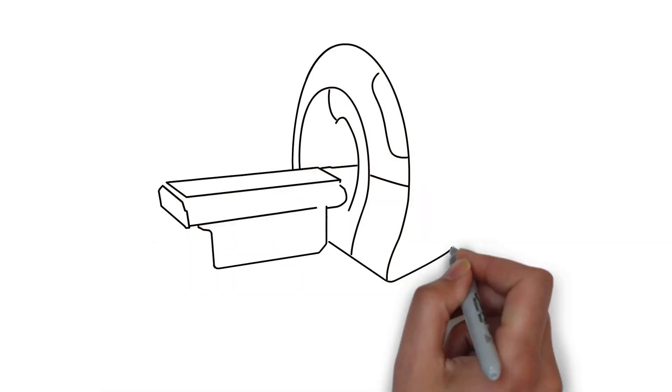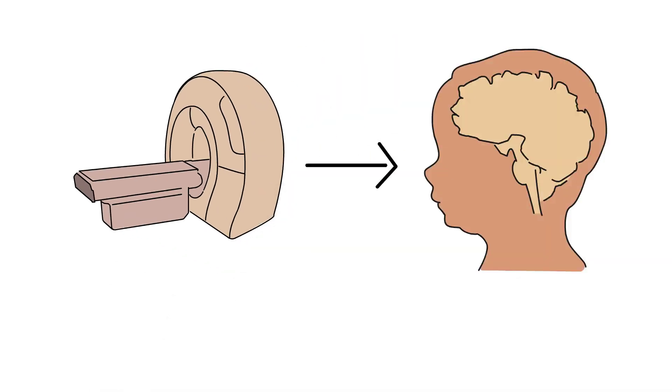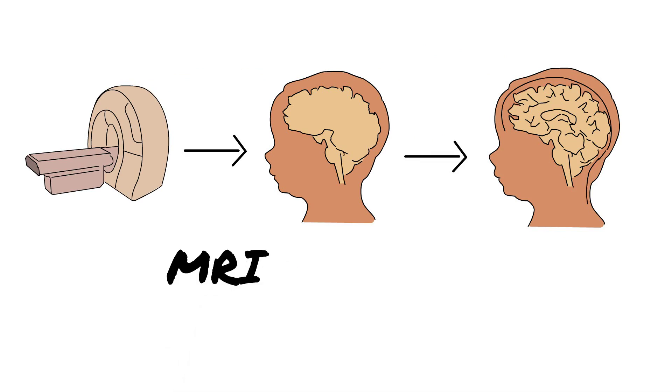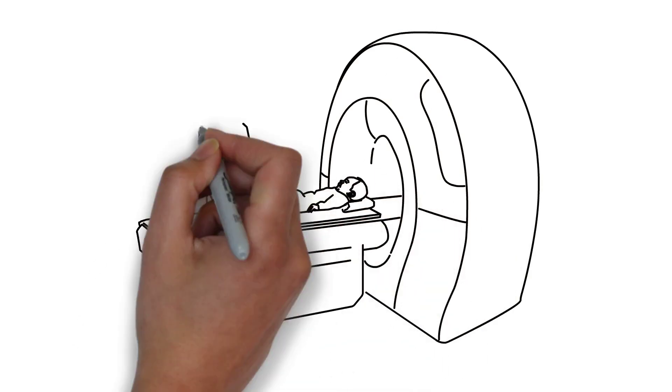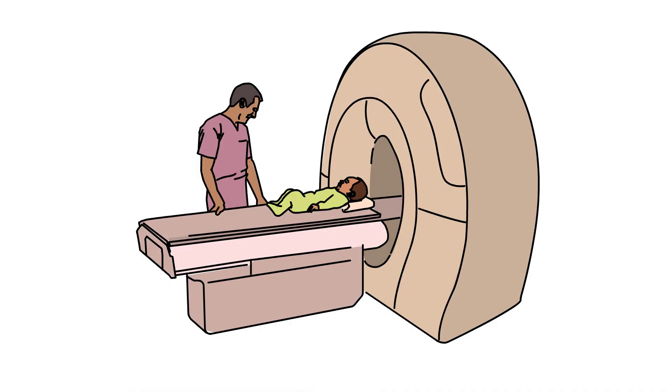The doctors ordered a picture of her brain. This is called a brain MRI. MRI stands for magnetic resonance imaging. An MRI takes pictures of the structures inside the brain. It is safe, painless, and doesn't use radiation.